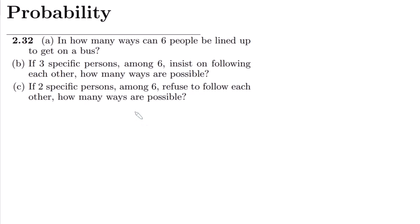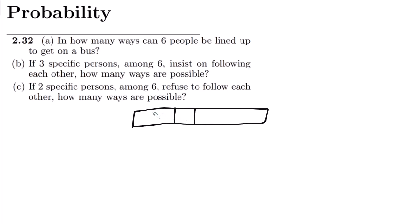Let us use the scenario of a box with different slots. We make six slots, and these six slots represent the six people who can be lined up to get on the bus. In the first slot, how many options do we have? We may have six people here. After placing one person, five will be left, then four, then three, then two, and finally only one person for the last slot.